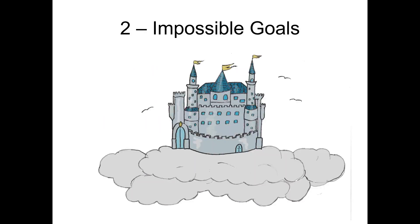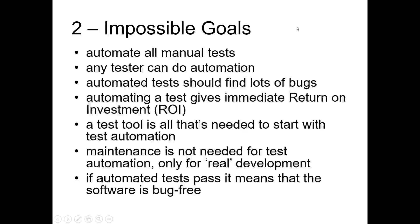The next method is especially for managers: impossible goals. For instance: automate all manual tests, or any test that can be automated. Maintenance is not needed for test automation, only for real development. A test tool is all that's needed to start. Automated tests should find lots of bugs. Doris Graham told me that at a conference she was sitting near a manager describing their test automation impressively — until he said, 'But I'm going to kill it.' She asked why. He said, 'Because they don't find any bugs.' So that manager was really good at destroying a good test automation.